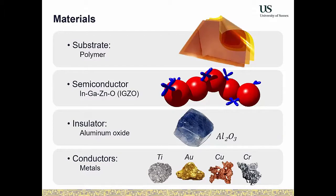We use aluminum oxide as the insulating material because it forms a nice defect-free interface with the indium gallium zinc oxide. We also use different conductors — mostly metals — to fabricate contacts, interconnection lines, and so on. We use different substrates and conductors to optimize the mechanical performance of our transistors for different applications.